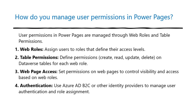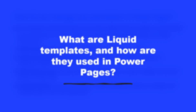How do you manage user permissions in Power Pages? User permissions in Power Pages are managed through web roles and table permissions. One, web roles: assign users to roles that define their access levels. Two, table permissions: define permissions — create, read, update, delete — on Dataverse tables for each web role. Three, web page access: set permissions on web pages to control visibility and access based on web roles. Four, authentication: use Azure ADB2C or other identity providers to manage user authentication and role assignment.